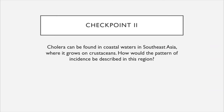The cholera pathogen can be found in coastal waters in Southeast Asia, among other areas, where it grows on the surfaces of crustaceans, so it is constantly present in this region. Checkpoint: How would we classify the pattern of incidence in this region? Would it be sporadic, endemic, epidemic, or pandemic?